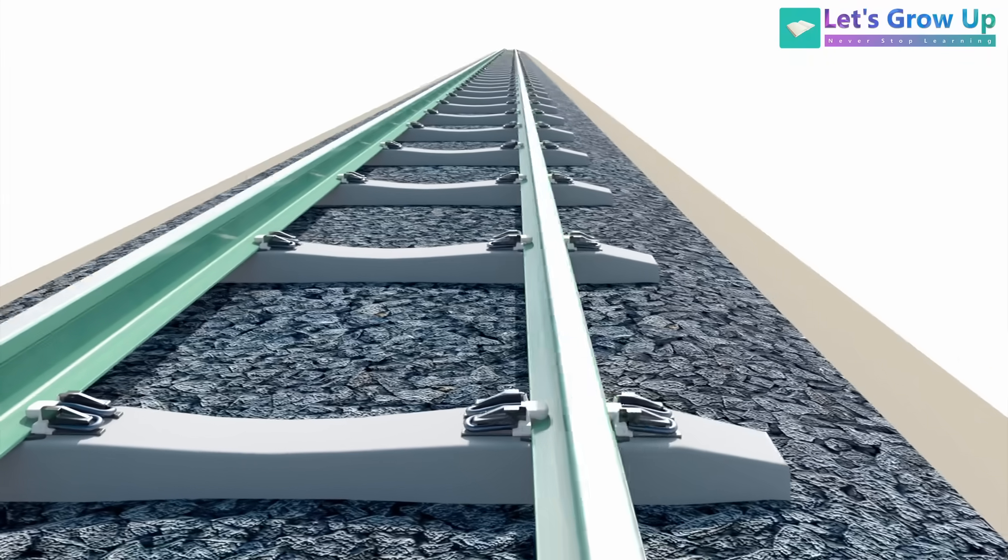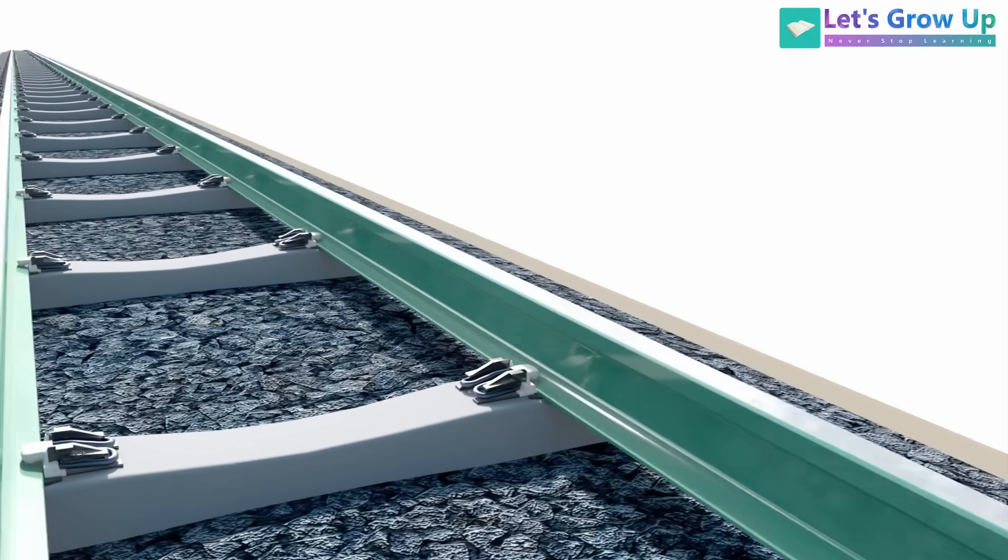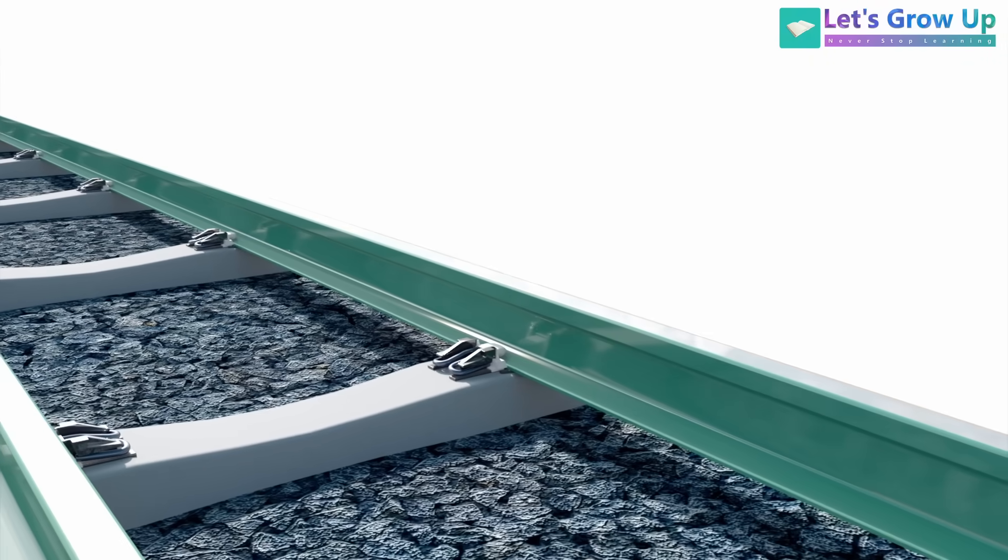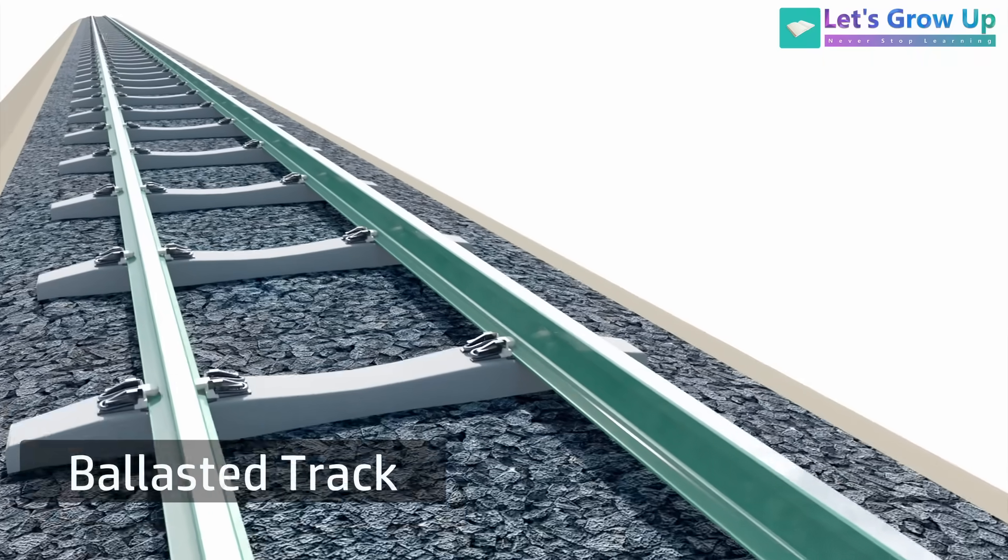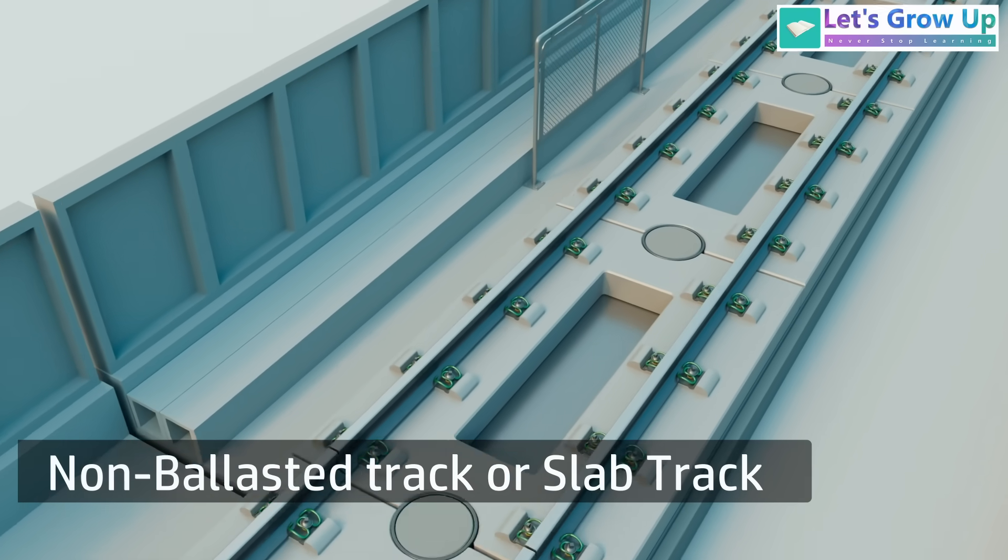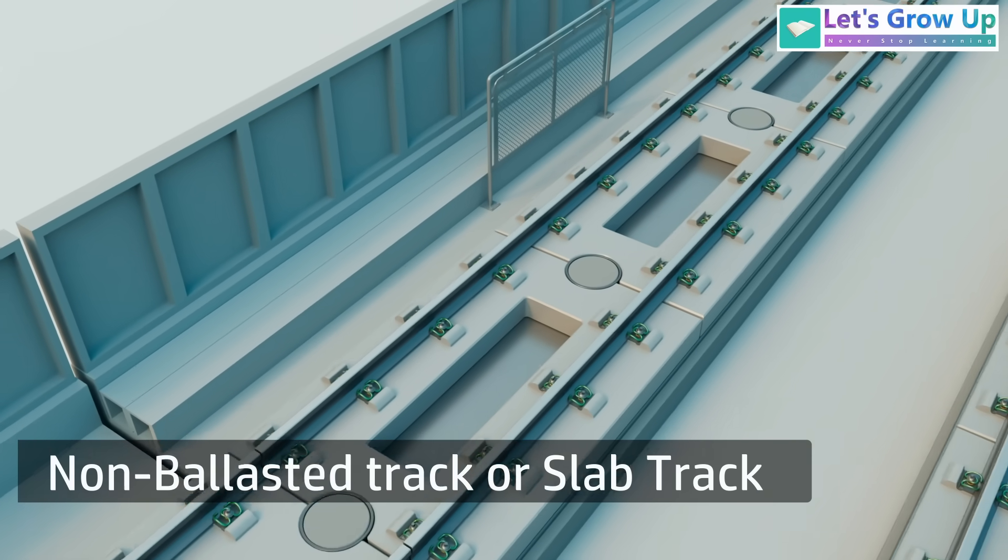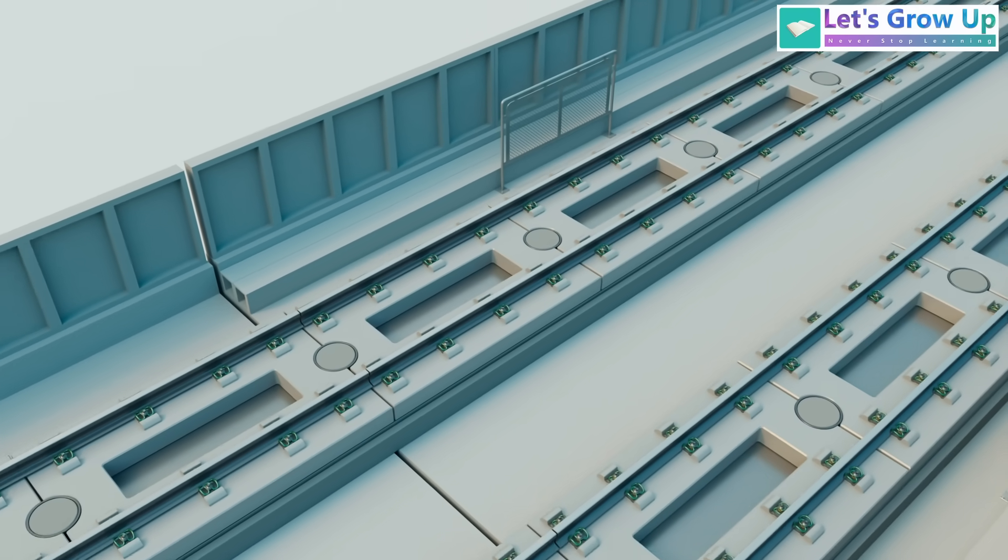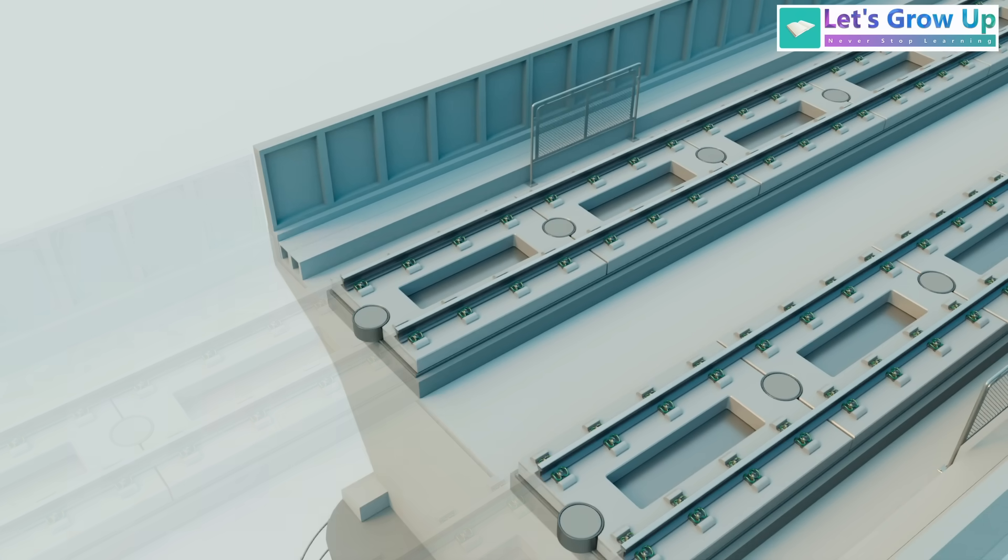Modern railway tracks can be broadly categorized into two types: the traditional ballasted track and the high-speed non-ballasted track or slab track. Slab tracks, especially those utilizing the J-slab or Japanese technology, are engineered for exceptional precision and stability.